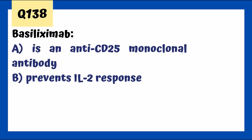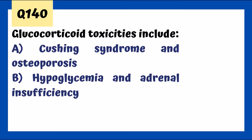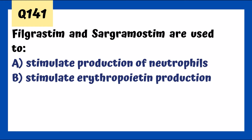Basiliximab is a monoclonal antibody that directly blocks the IL-2 receptor — it works similarly to sirolimus but doesn't act on mTOR, it blocks the receptor itself. Glucocorticoids inhibit NF-kappa-B — that's how they work. Glucocorticoid toxicities include Cushing's syndrome, osteoporosis, and hyperglycemia (not hypoglycemia). Filgrastim and sargramostim are colony stimulating factors used to stimulate production of neutrophils in leukopenias, increasing granulocyte and monocyte count — also known as GCSF and GMCSF.